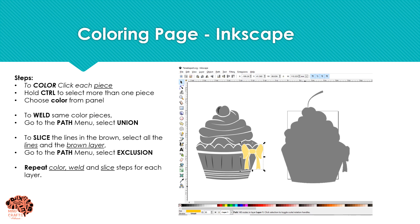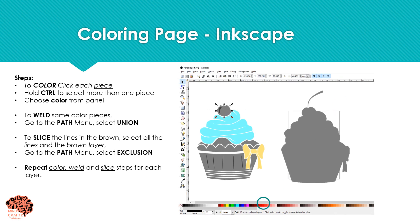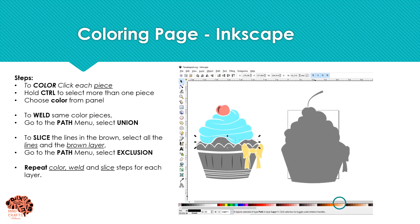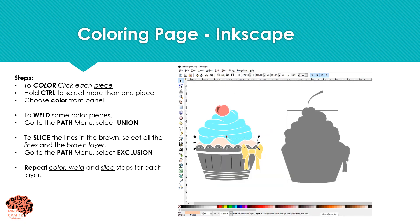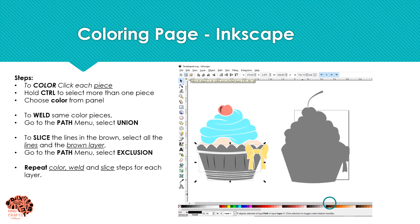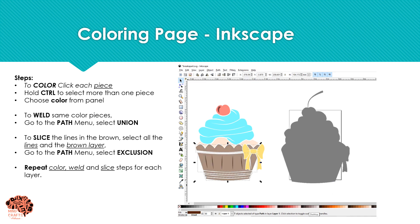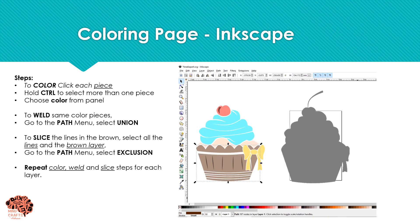So now we're just going to repeat the color and weld steps for each other layer. We'll do the next as the frosting in blue, give our cherry some red, give our cupcake some tan. There are three layers, so we're going to go to Path and Union to convert that to one layer. Next, we'll select all of our cupcake pieces at the bottom and turn that into brown. Again, it's separate pieces, so we're going to go Path and Union to convert those into one layer.